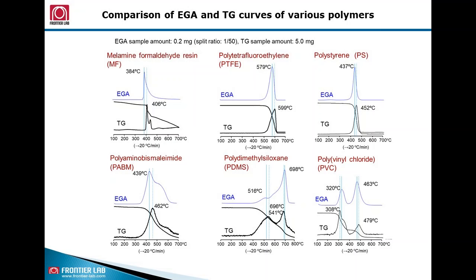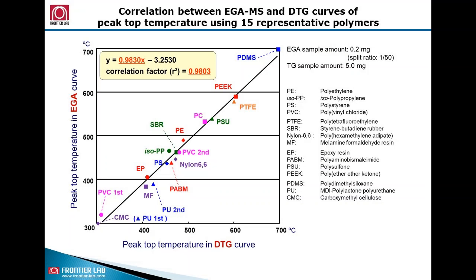We can see that the peak top temperature of TGA is higher than EGA-MS for all types of polymers we tested. Further, both temperature data shows good correlation except that TGA data is consistently higher than EGA-MS data.